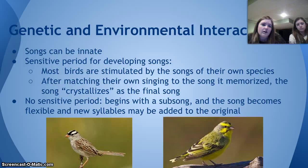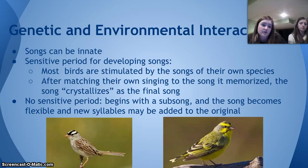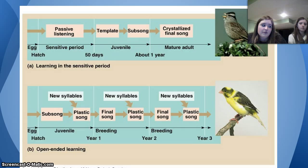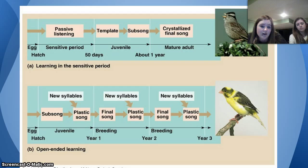Genetic and environmental interaction can be illustrated with bird songs. There is a sensitive period for developing songs, and most birds are stimulated by the songs of their own species. After matching their own singing to the song they memorized, the song crystallizes as their final song. When there's no sensitive period, it begins with a subsong and the song becomes flexible, with new syllables added to the original each year — so there is never really a crystallized final song.